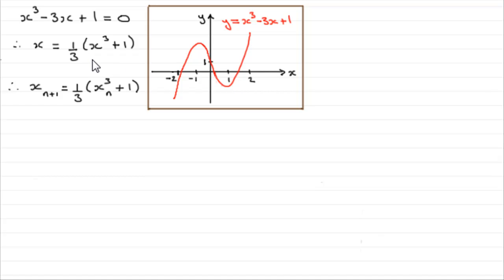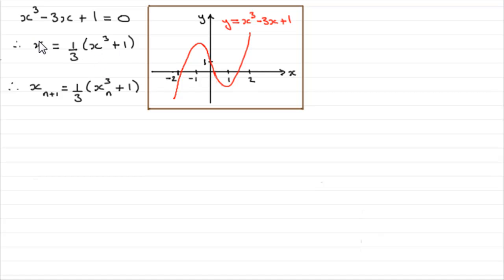To form an iterative equation, what we did was make one of the x's from our equation the subject. There were various ways of doing it. One way was by making x the subject: we added 3x to both sides and then divided by 3 to give us x equals a third x cubed plus 1. So the solutions would be exactly the same solutions you'd get at the intersections of y equals x and the graph y equals a third x cubed plus 1.